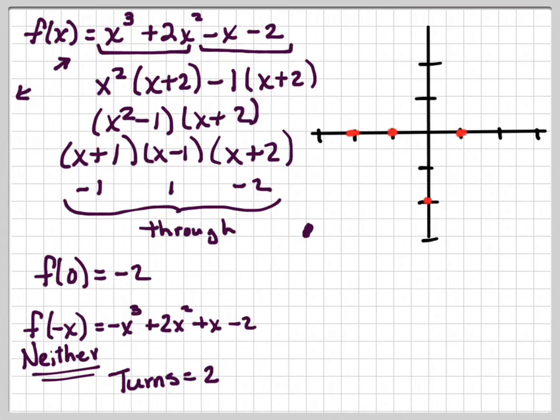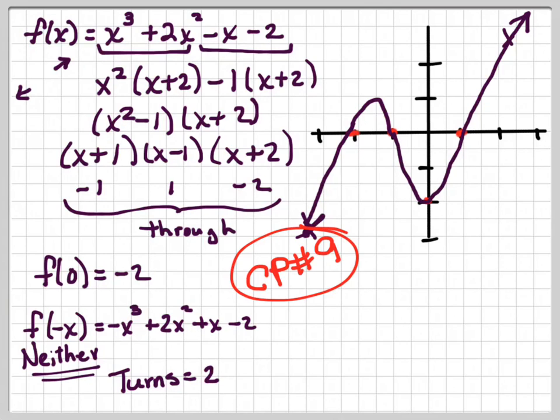Okay. So we know we're going to start down here. And we have to go up through negative 2 and then turn around and come back through negative 1. And we have, there's our one turn. We only have one more turn. So we have to go all the way down to the y-intercept and then up through the next root. So basically that's what our graph looks like. Okay. So go ahead and do checkpoint number 9. And I'll see you in class. Bye.